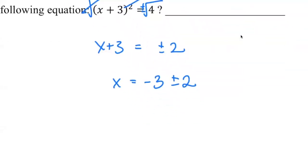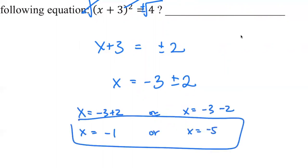Now, to get the actual answer, we will consider both scenarios. x = -3 + 2 would be -1, or x = -3 - 2 = -5. So we have these two answers.